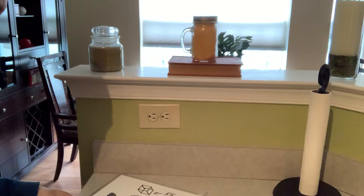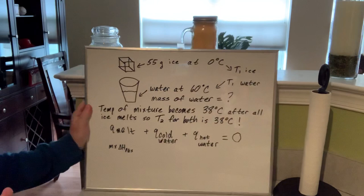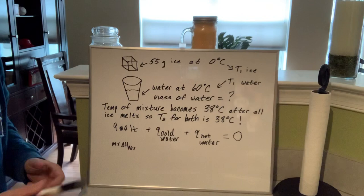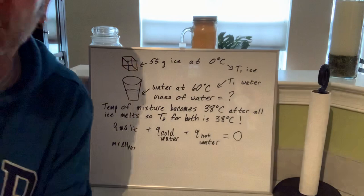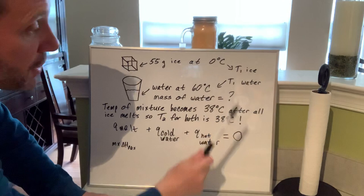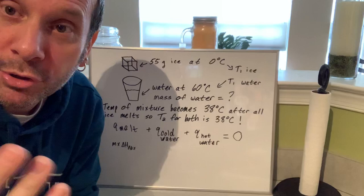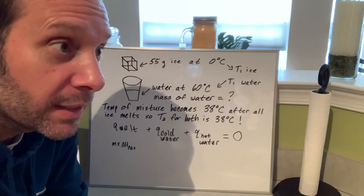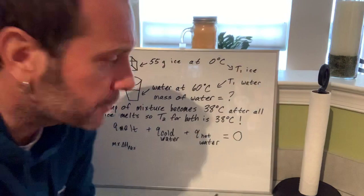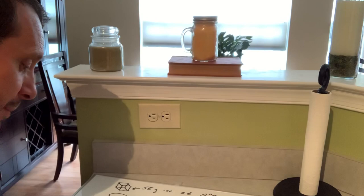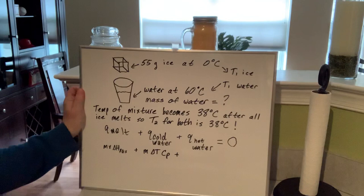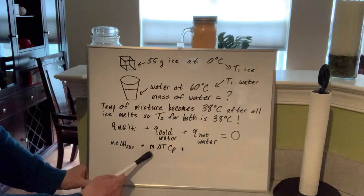The delta H of fusion is the 333 number — 333 joules per gram. We have the mass of the ice and we know delta H of fusion, so we can figure that out. For the cold water: when 55 grams of ice at zero melts, it becomes 55 grams of water at zero, and that water goes from zero to 38 degrees Celsius. Since temperature is now changing and it's water, it's mass times delta T times Cp — not mass times delta H of fusion.